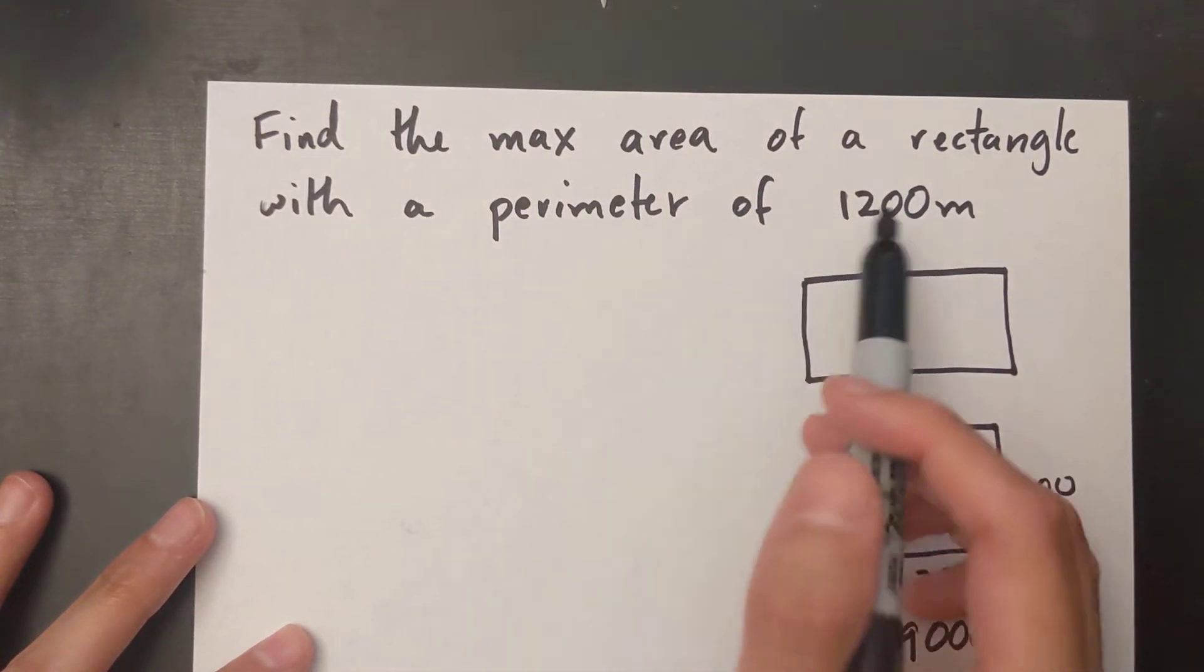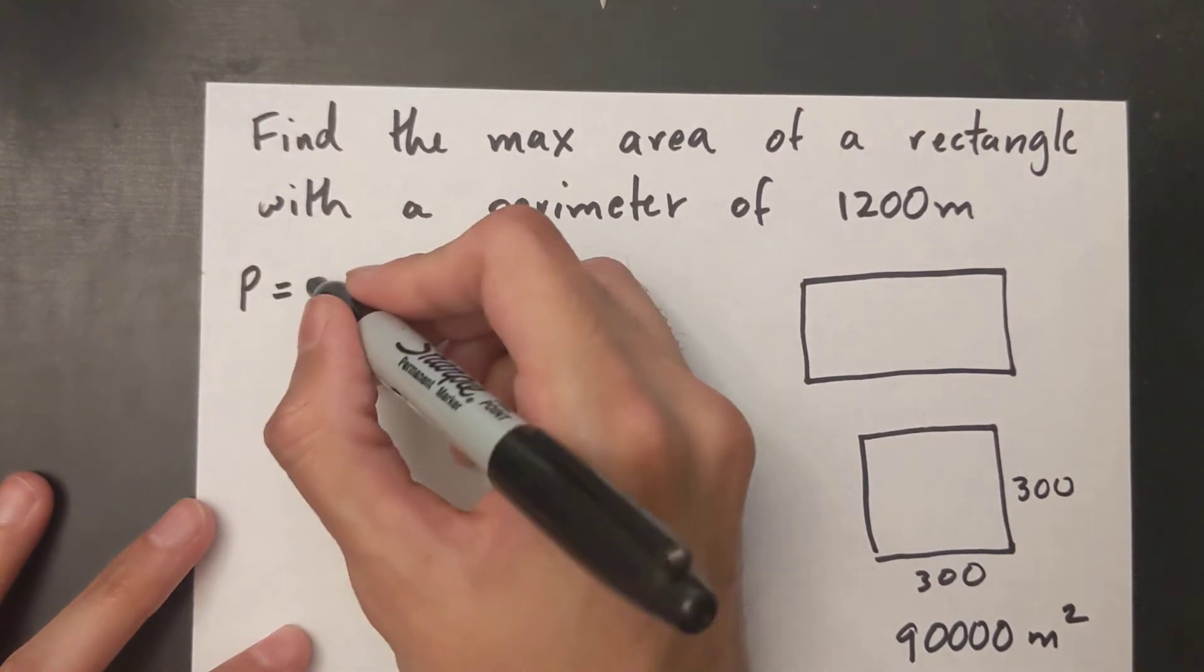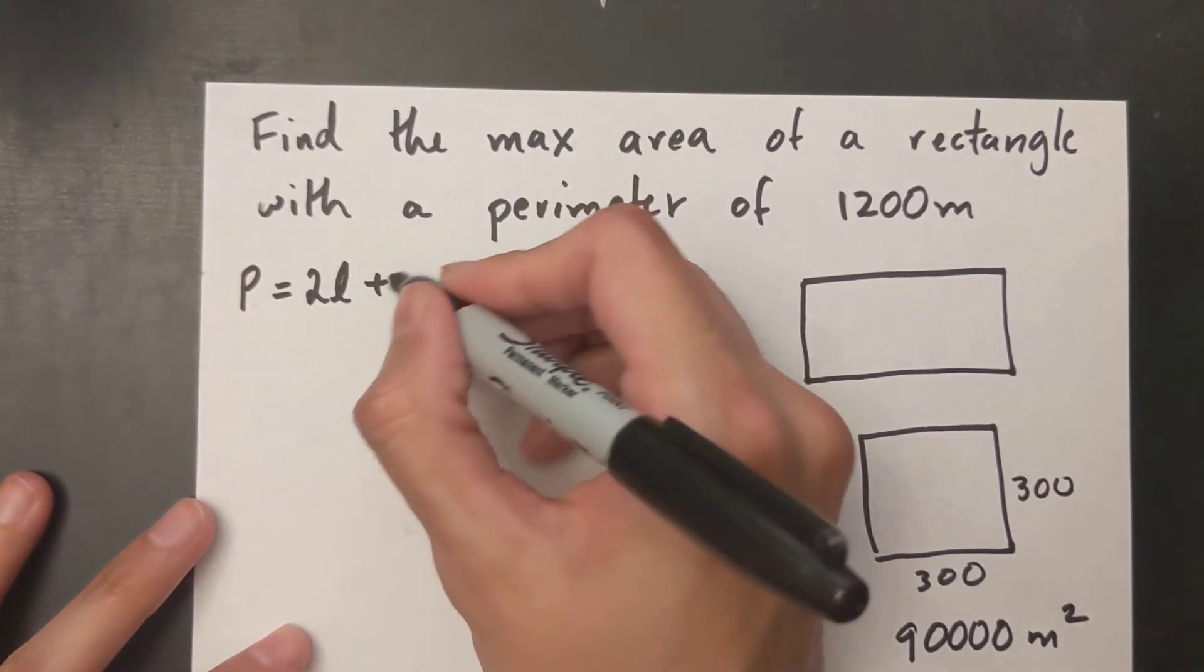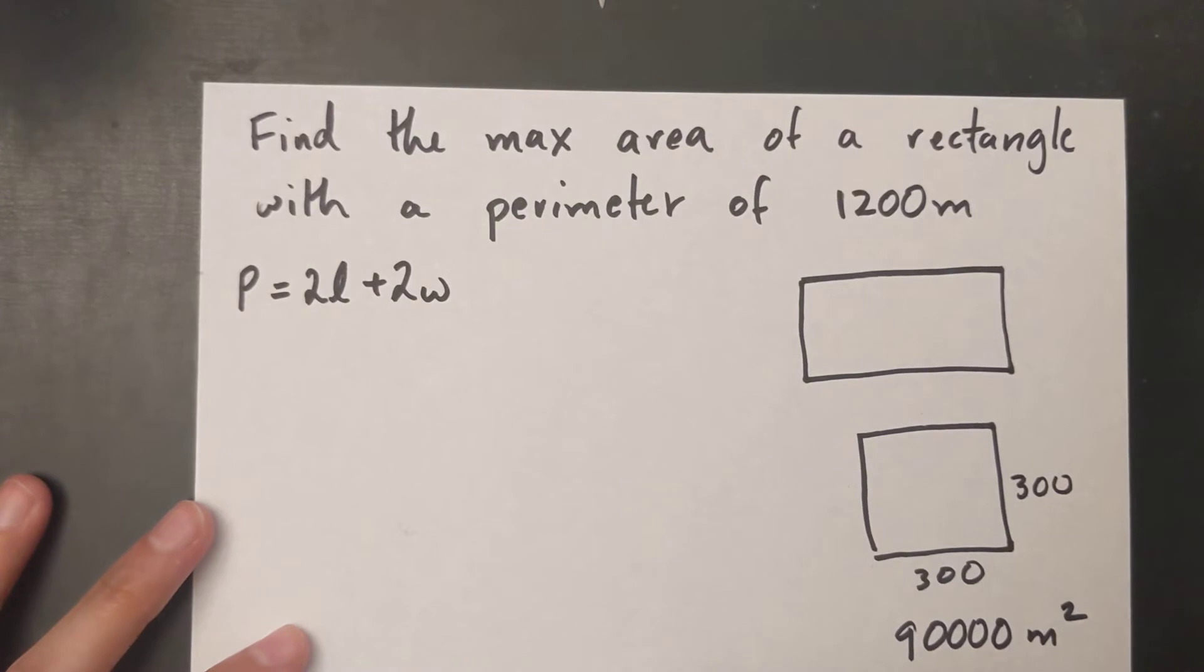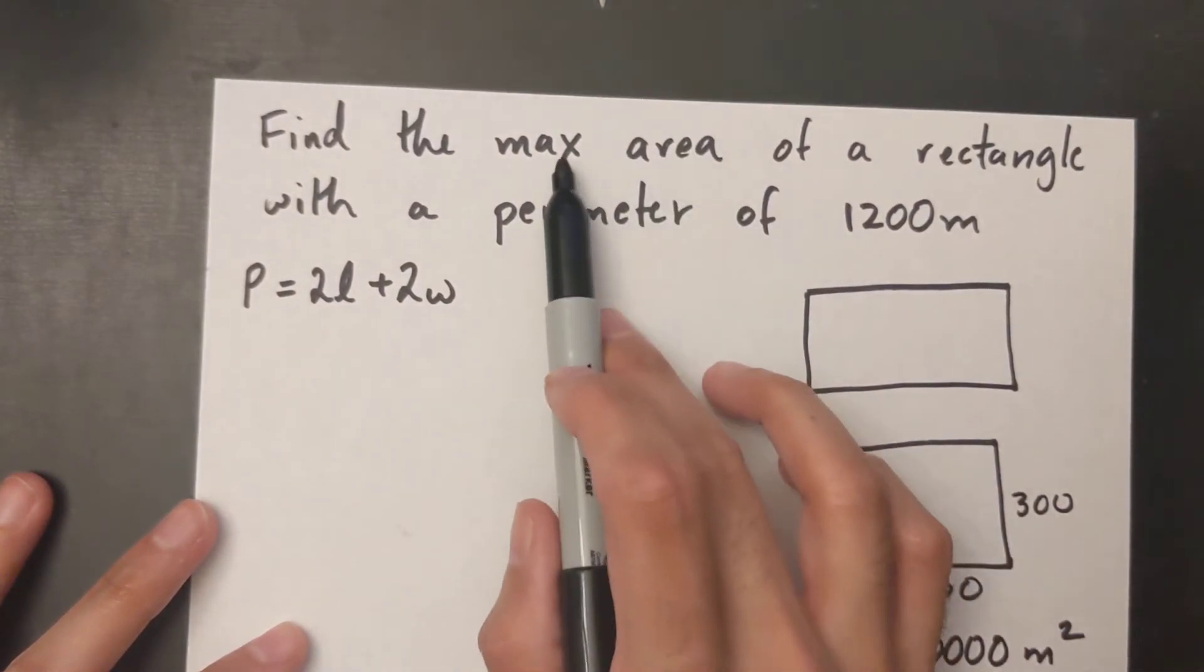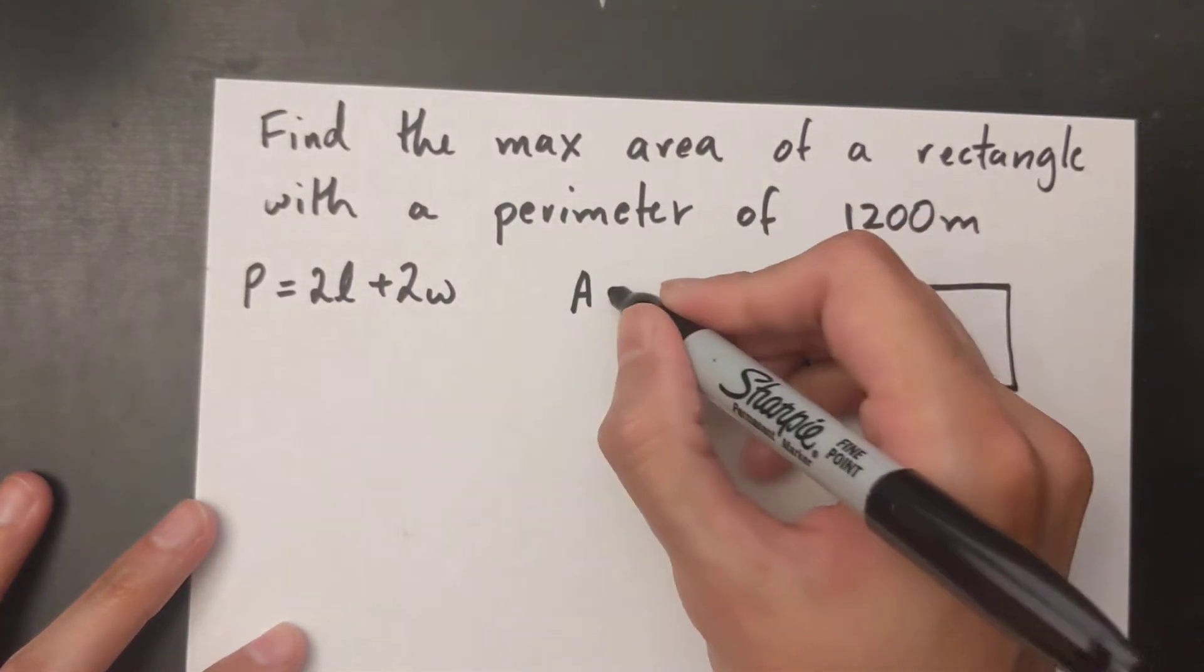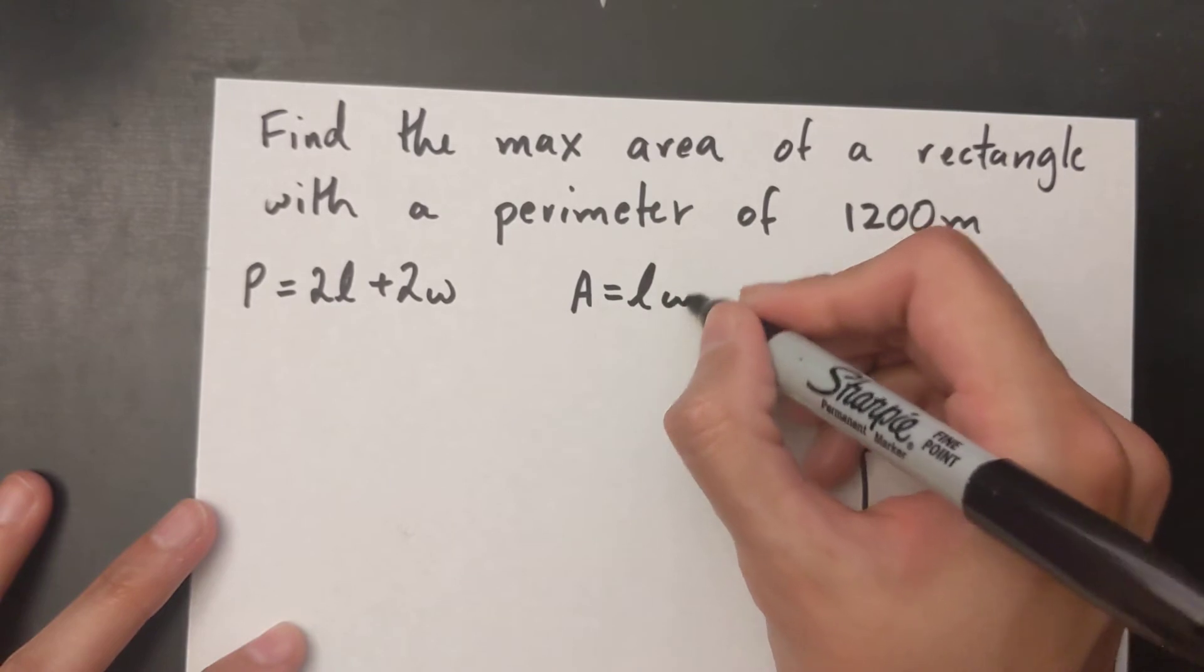The first thing I'm going to do is I know that I have my perimeter, so I'm going to write my perimeter formula: P equals 2L plus 2W. The second thing I know is that I have to find the max area. I'm going to write my area equation here: area is just length times width.